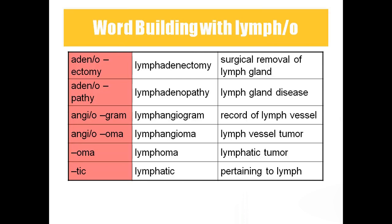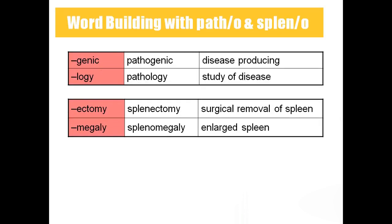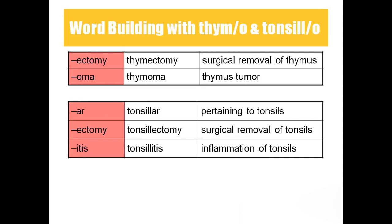Lymphoma — lymphatic tumor. Lymphatic — pertaining to the lymph. Pathogenic — disease-producing. Pathology — study of disease. Splenectomy — surgical removal of spleen. Splenomegaly — enlarged spleen. Thymectomy — surgical removal of thymus. Thymoma — thymus tumor. Tonsillar — pertaining to tonsils. Tonsillectomy — surgical removal of tonsils. Tonsillitis — inflammation of tonsils.